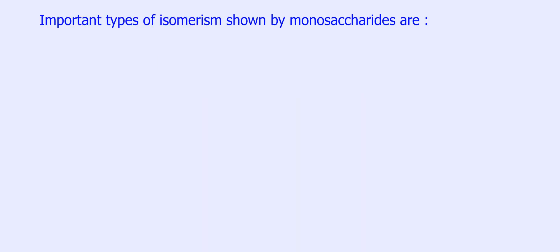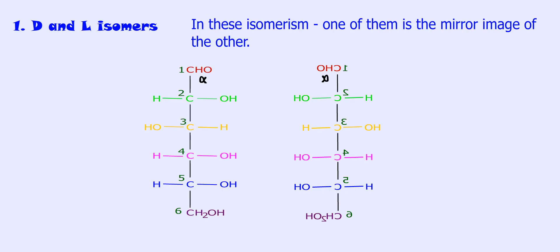Important types of isomerism shown by monosaccharides: 1. D and L isomers. In this isomerism, one of them is the mirror image of the other. Example: D and L glucose. Most of the monosaccharides occurring in mammals are of the D-configuration.